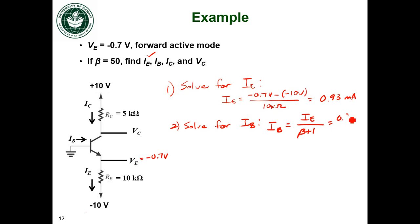So this is 0.93 milliamps divided by beta, which is 50 plus 1, so divide by 51. And my base current is about 18 microamps.